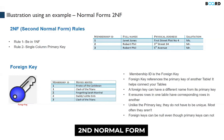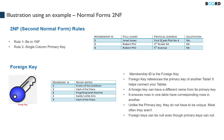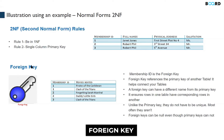Now let's talk about the second normal form. For a table to be in second normal form, rule number two is it should have a single column primary key — it cannot be a composite primary key. Here in this table, the membership ID is a single column primary key, each record is unique, and each cell has only one value, so this table is in the second normal form.